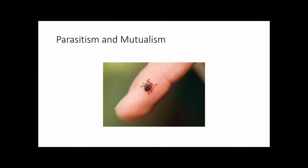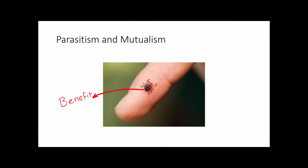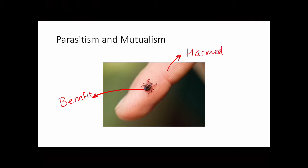One more example — pause the video, decide whether it's parasitism or mutualism, and come up with your reason. In this example we have a tick and a human. The tick sucks blood from the human, so the tick gets a benefit. However, the human ends up being harmed — not killed, but harmed.